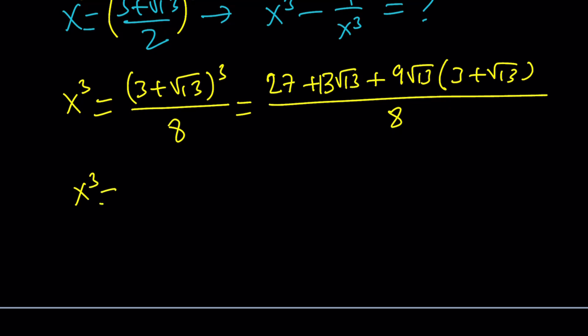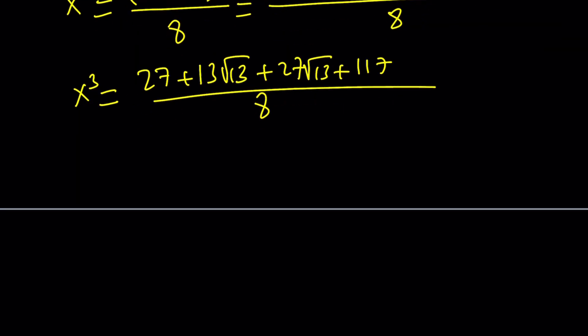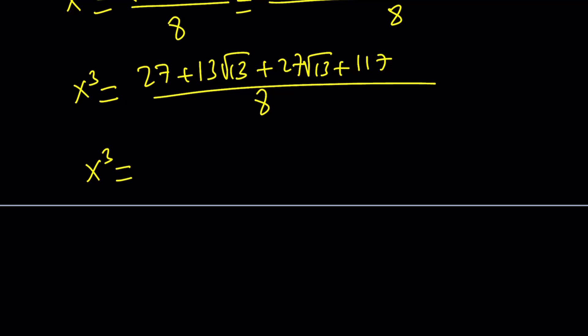So x cubed from here is going to be, if we simplify this, 27 plus 13 root 13, plus 27 root 13, plus 9 times root 13, times root 13. That's going to be 9 times 13. And that's going to be 117. Add them all up and divide it by 8. This is x cubed.